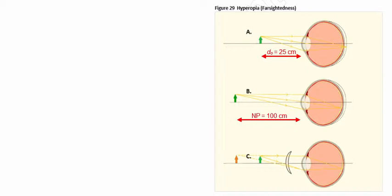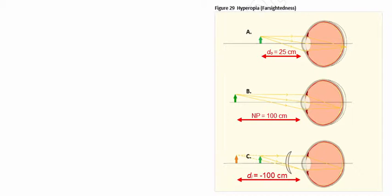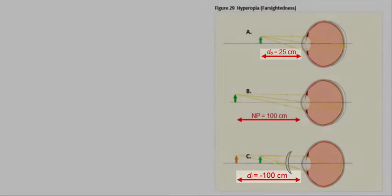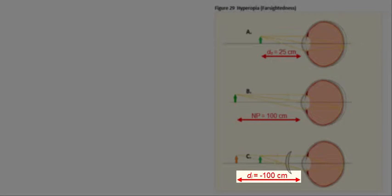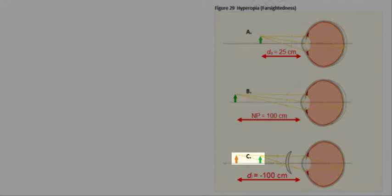Now, the converging lens will form an upright virtual image at the near point of the hyperopic eye. In turn, the virtual image then acts as the object for the eye itself. Note, the object's distance is positive, but the image distance is negative. Recall earlier in Table 6, we stated that the image distance is negative when the image is virtual and on the same side of the lens as the object.